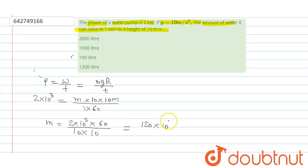So it becomes 1200 liter. Therefore, option D is correct.